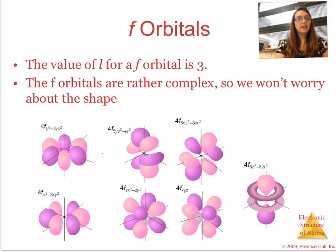And then finally, we have the f orbitals. So when you have a value of l equals 3, you actually are working with the f orbitals. Now the f orbitals are pretty complex, so we're not going to worry about the shape again, but f orbitals only start when you are at n equals 4. So if you're at n equals 4, that's when you will start the 4f orbitals. Otherwise, you're not going to have the f orbitals there.